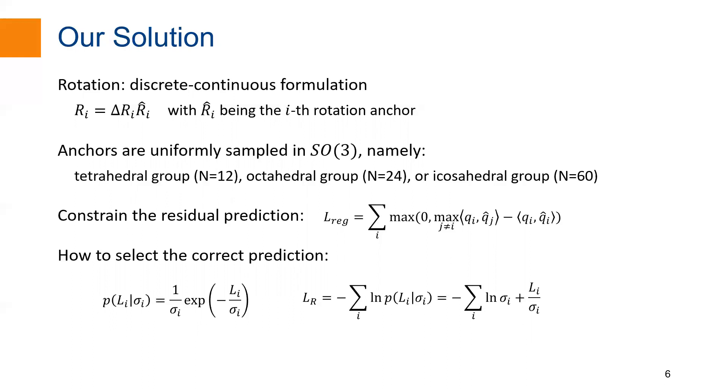Then, we predict the deviation delta r at each rotation anchor. The final prediction at i-th anchor is obtained by multiplying the residual rotation delta r_i and the anchor r_i. To constrain the range of the residual rotation such that the final prediction at each anchor stays within its local vicinity, we add another regularization term to the loss function. The residual rotation is penalized if the final prediction is closer to any other anchor than its corresponding anchor. The general idea of our formulation is that each anchor is only responsible for a local region, and all anchors jointly cover the whole rotation space.